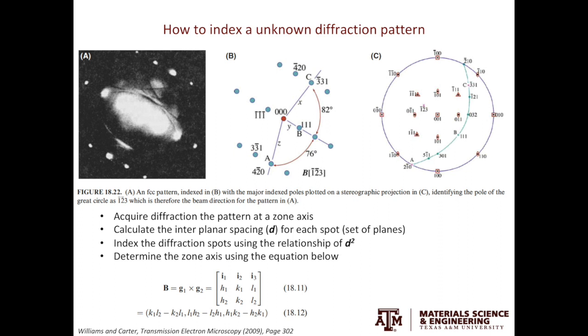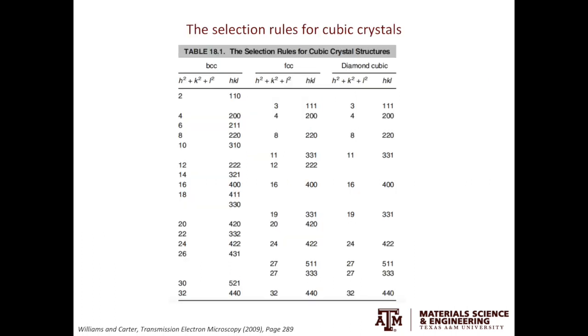To answer these three questions, we'll start by measuring the D spacing using diffraction spots. Tabulate what you have and compare that to the selection rule table. If you have D1 square over D2 square equals to 8 over 6, then you know your crystal is BCC, not FCC or diamond cubic.